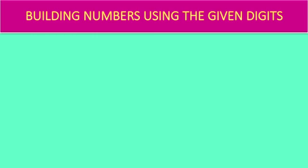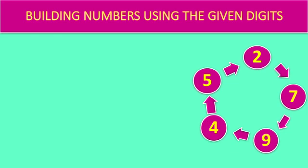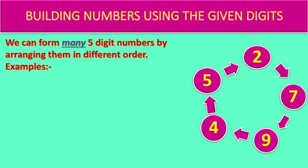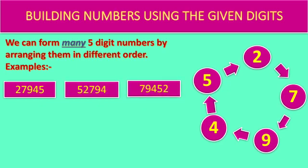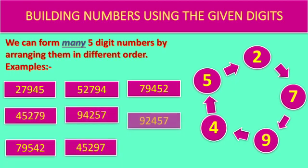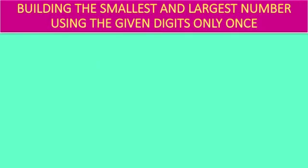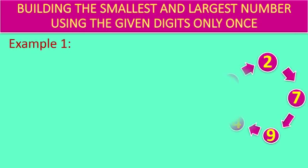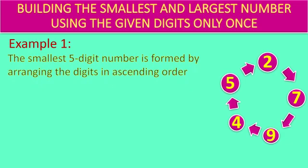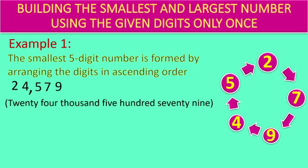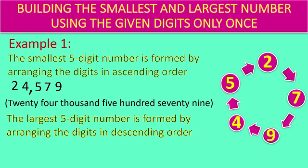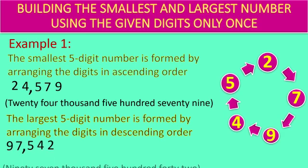Building or forming numbers. Look at the digits. Using these digits, we can form many 5-digit numbers by arranging them in different orders — for example, 27,945, 52,794, 79,452, and so on. To form the smallest possible number, arrange the digits from smaller to bigger: 2, 4, 5, 7, 9. Therefore, the number is 24,579. To form the largest possible number, arrange the digits in descending order: 9, 7, 5, 4, 2. Therefore, the number is 97,542.